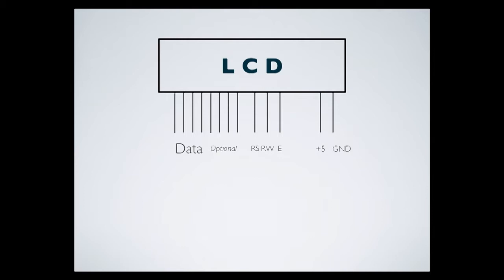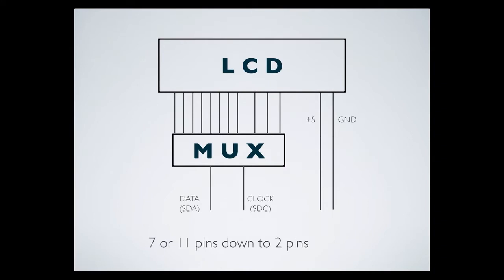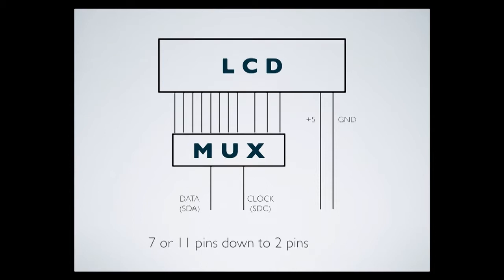With a serial LCD, they add what I'll call a MUX — a multiplexer — that has pins going to the LCD but talks to the Arduino using just two pins: the data pin and the clock pin. You still need 5 volts and ground, but those don't use up any I/O pins. That brings the seven or eleven pins of a parallel LCD down to just two, freeing up a ton of pins.